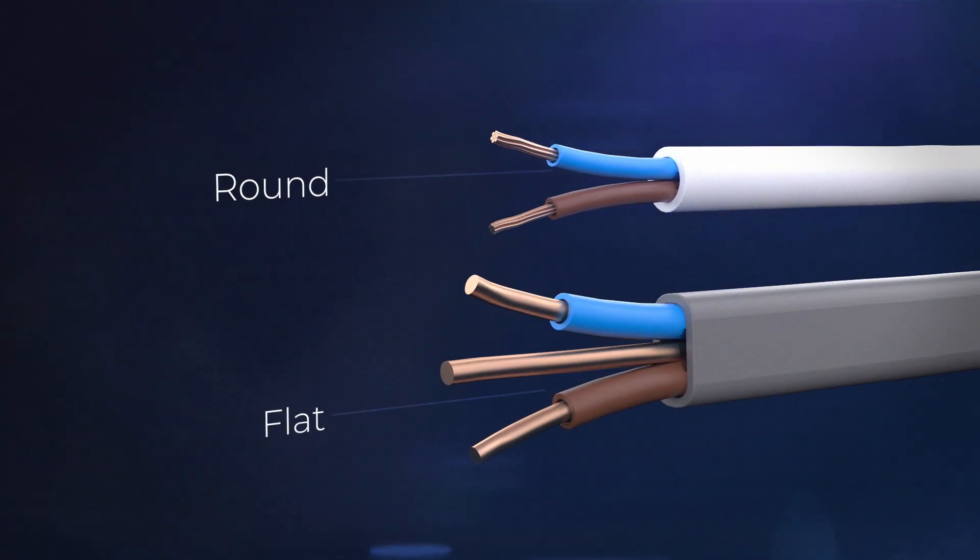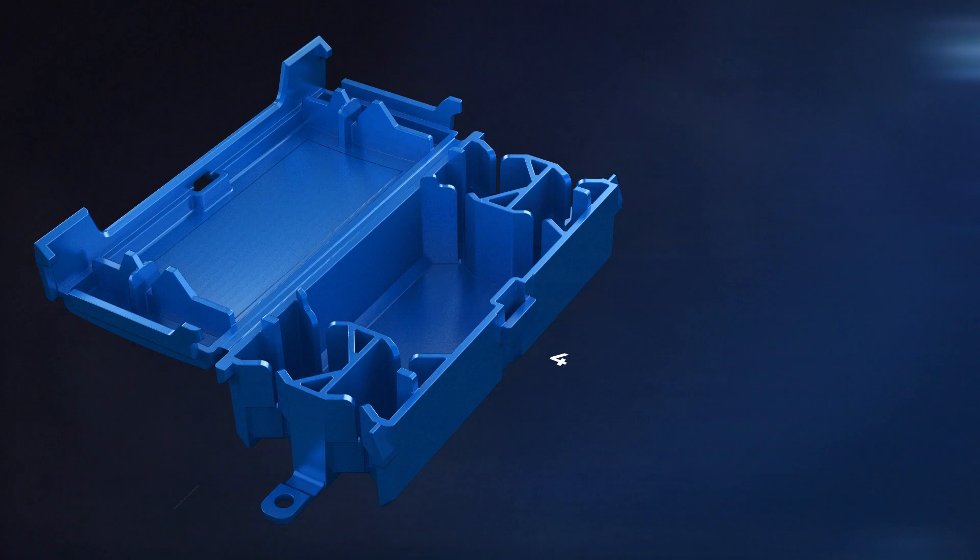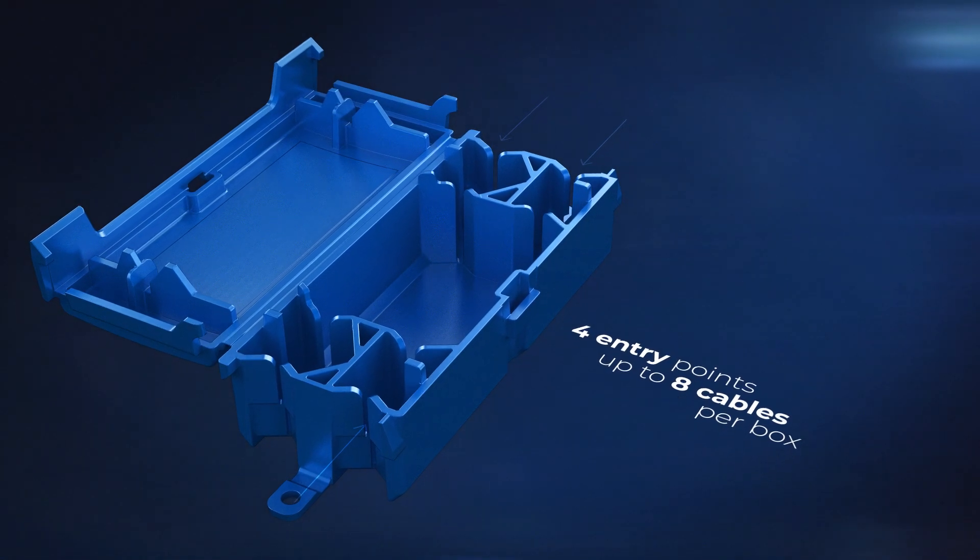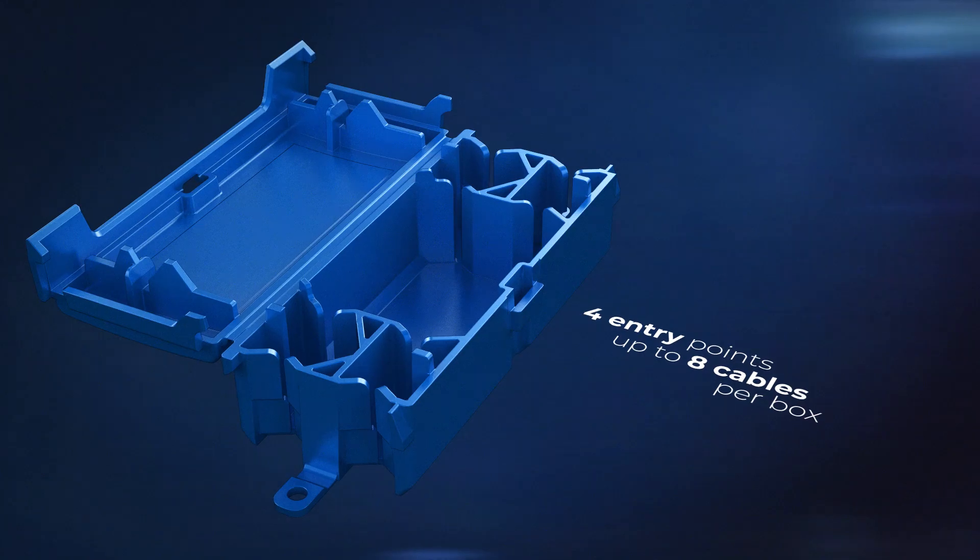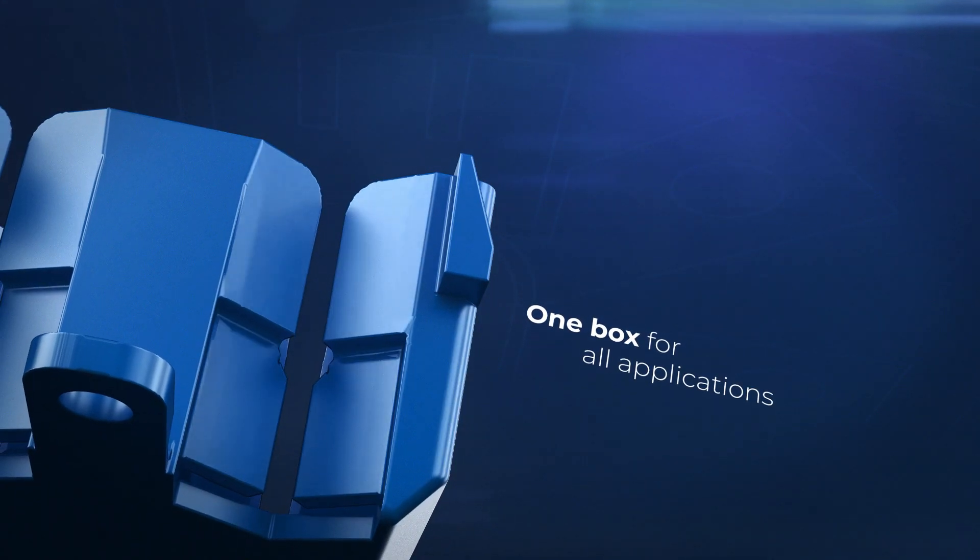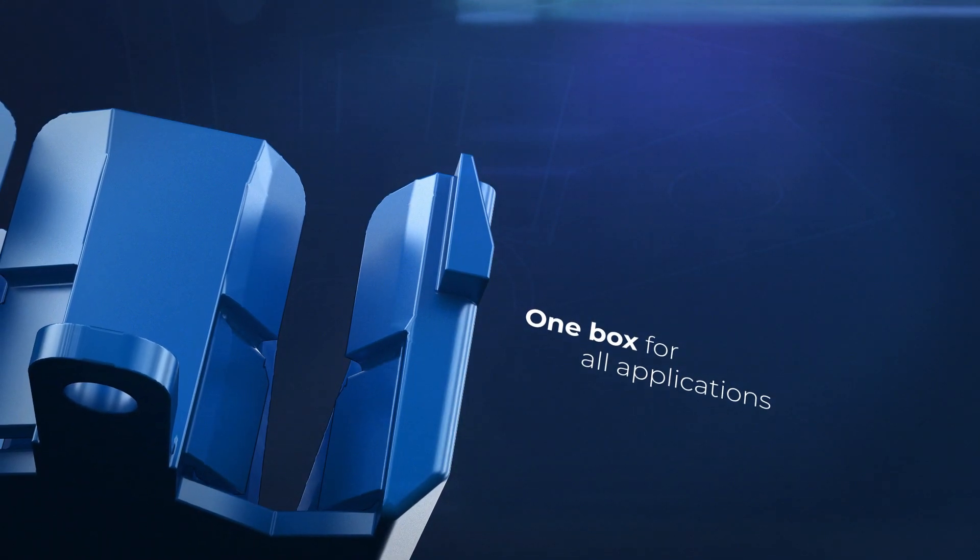The Insure Box is designed for both power and lighting, with four entry points and fitting up to eight cables per box. Its versatility means there is no need to carry multiple box types for different applications.